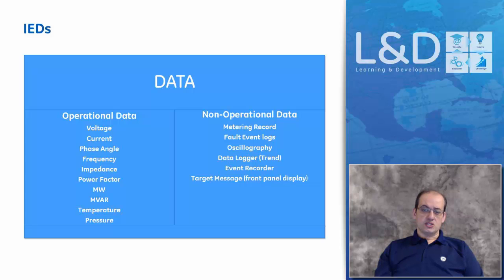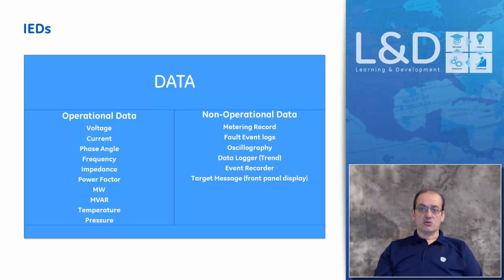Operational data in a device could be either sensed data — where a sensor picks up a value immediately, like voltage or current — or it could be calculated data, where we take the primary data and make a calculation before transmitting data to the next layer.